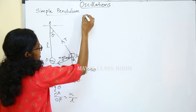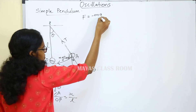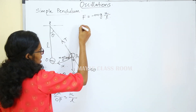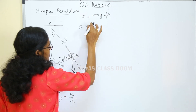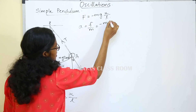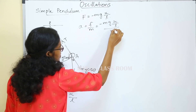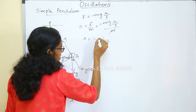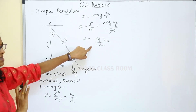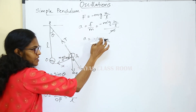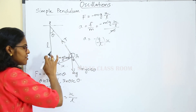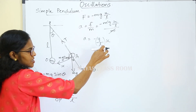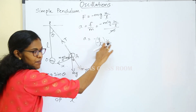F equals minus mg into theta, and theta equals x by L, so F equals minus mg times x divided by L. Acceleration equals F by m, which gives minus mg times x divided by L divided by m. M cancels, so acceleration equals minus g by L into x. Since g and L are constants, acceleration is directly proportional to displacement — this is simple harmonic motion.